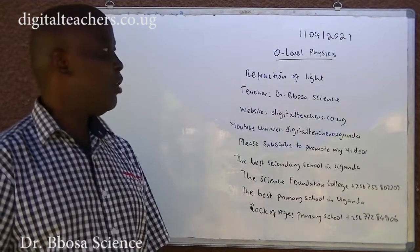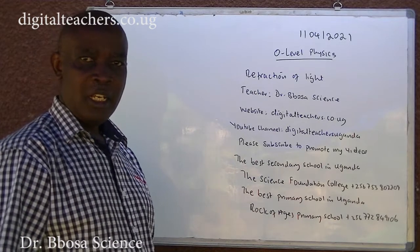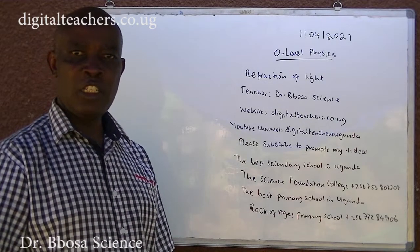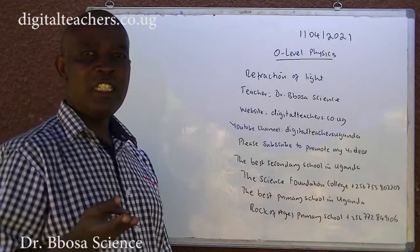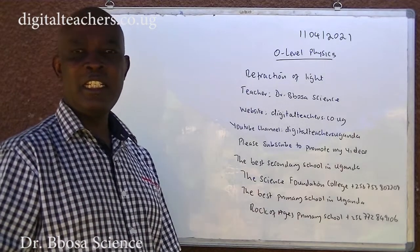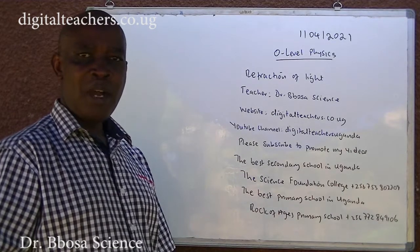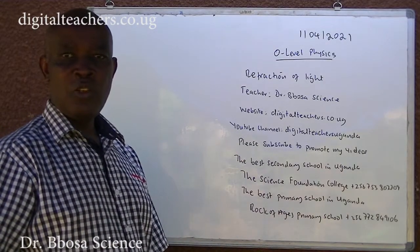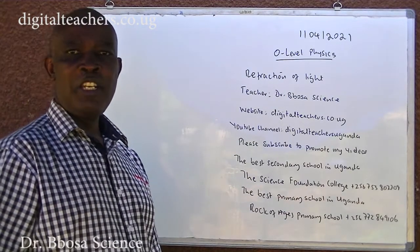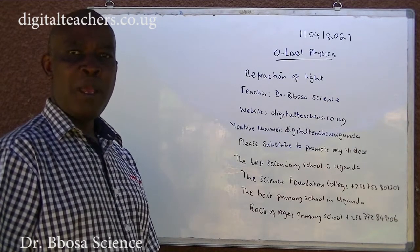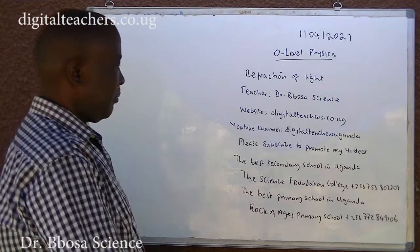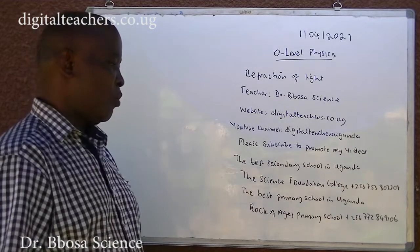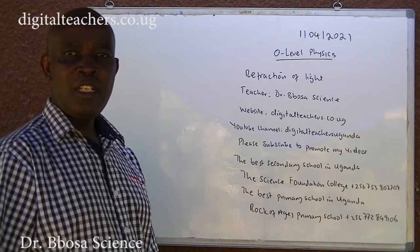Today, 1st April 2021, we are going to study reflection of light at O-level. Our website is digitalteachers.co.ug. Here find notes, exams, and marking guides in physics, chemistry, biology, math, and primary science. Our YouTube channel is digitalteachers.uganda. Here find videos of physics, chemistry, biology, and math of primary and secondary sciences. The best secondary school in Uganda is the Science Foundation College. The best primary school in Uganda is the Lock of Ages primary school.